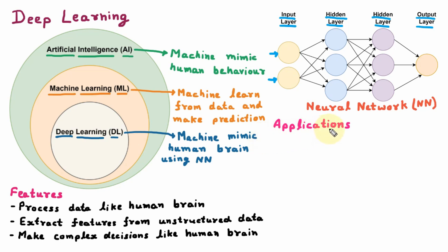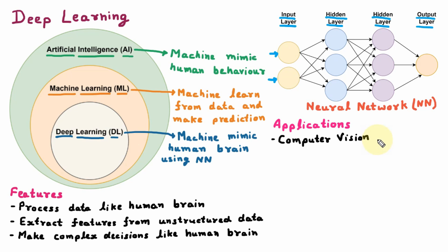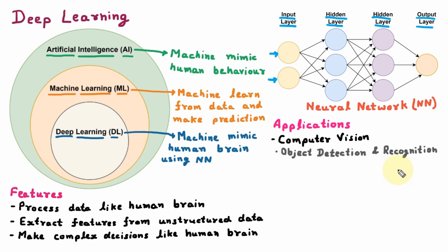Now we are learning the applications of Deep Learning. The first one is Computer Vision. Here, vision means images and videos, so Computer Vision signifies that the computer is analyzing images and videos so that it can find people, persons, or some information out of that. There are various applications under Computer Vision, such as Object Detection and Recognition, where an image is given to the computer and from that it detects some object and recognizes it.